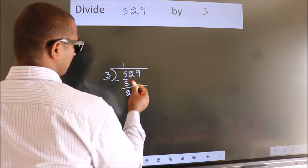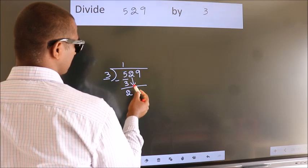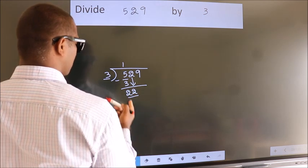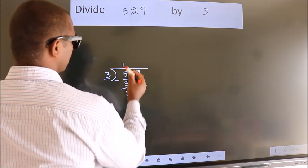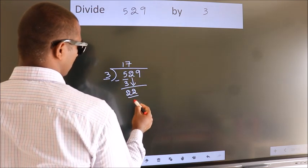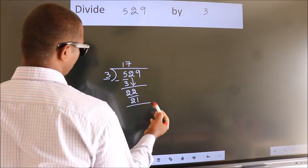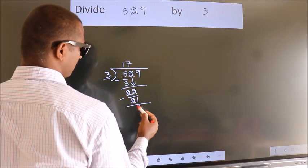After this, bring down the beside number, so 2 down, so 22. A number close to 22 in 3 table is 3 7s 21. Now, we subtract, we get 1.